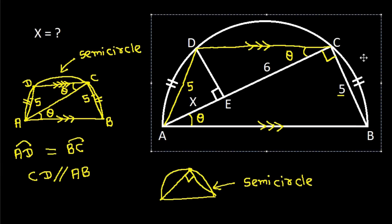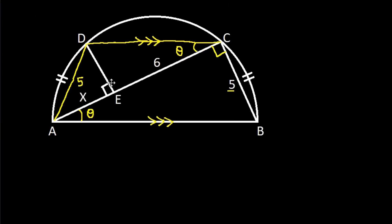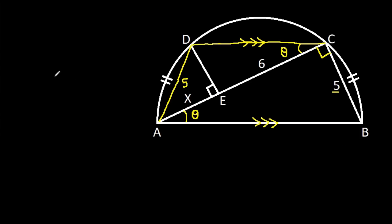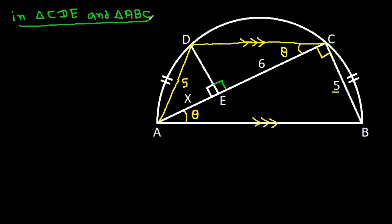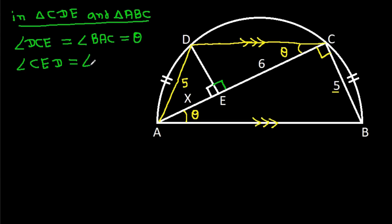Also, angle AED is 90 degrees. Now in triangle CDE and triangle ABC, we have angle DCE equal to angle BAC, that is theta, and angle CED equal to angle ACB, that is 90 degrees.